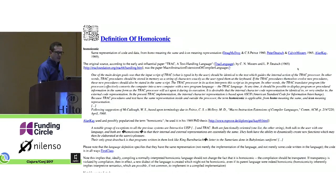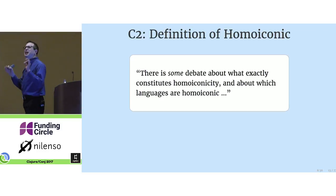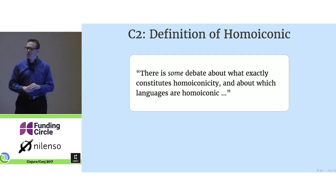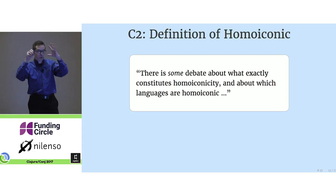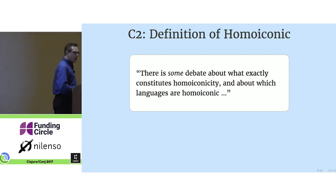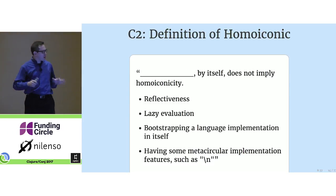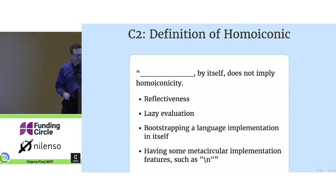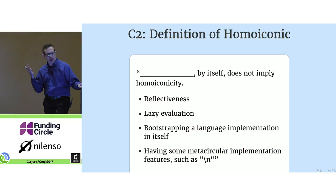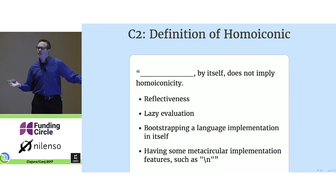So the authors themselves had this to say: that there is some debate about the definition of this term. I read pages and pages of back-and-forth discussions in wiki text on this site. They seem to agree on some things that it's not — just having reflection in your language, or being able to bootstrap a language in itself. That alone does not make a programming language homoiconic.